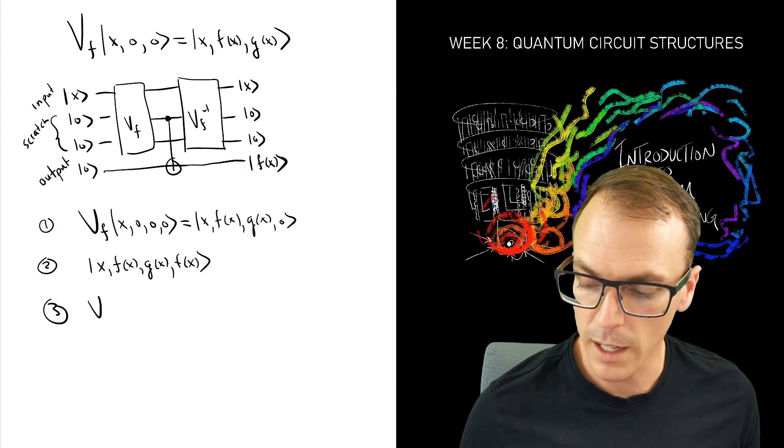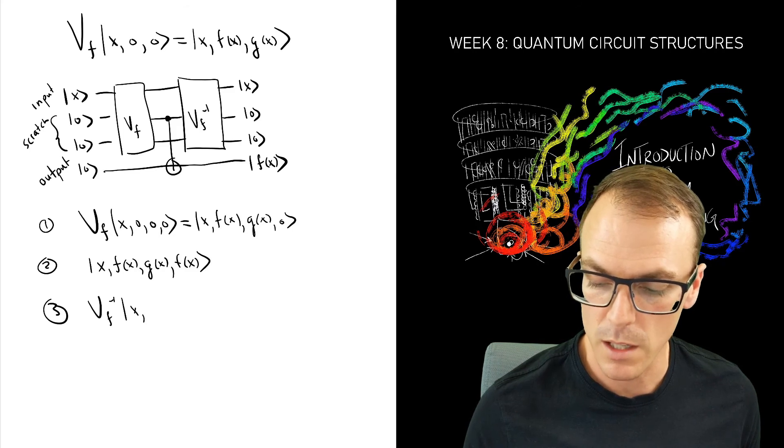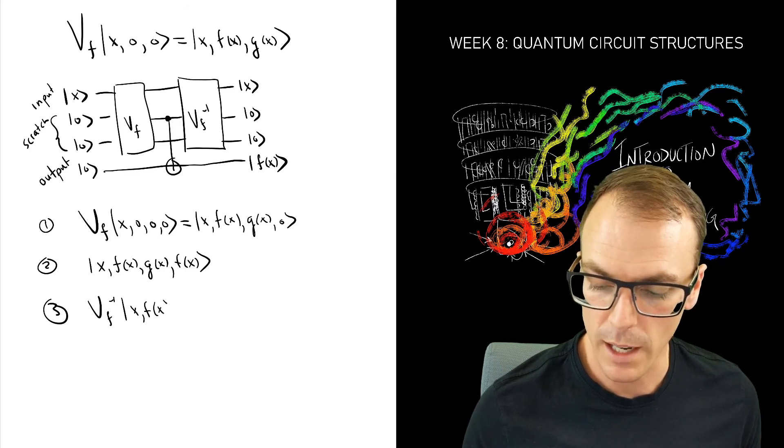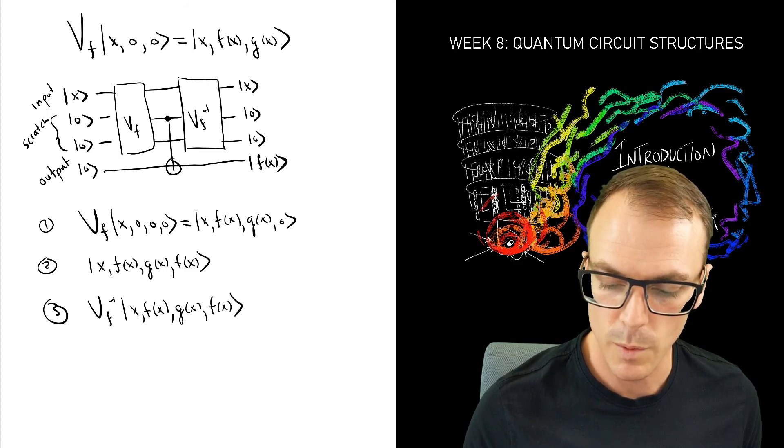And now we apply the inverse. And V inverse only acts on these first three registers. So we have the value of the function, the garbage, and the function again that has been copied.